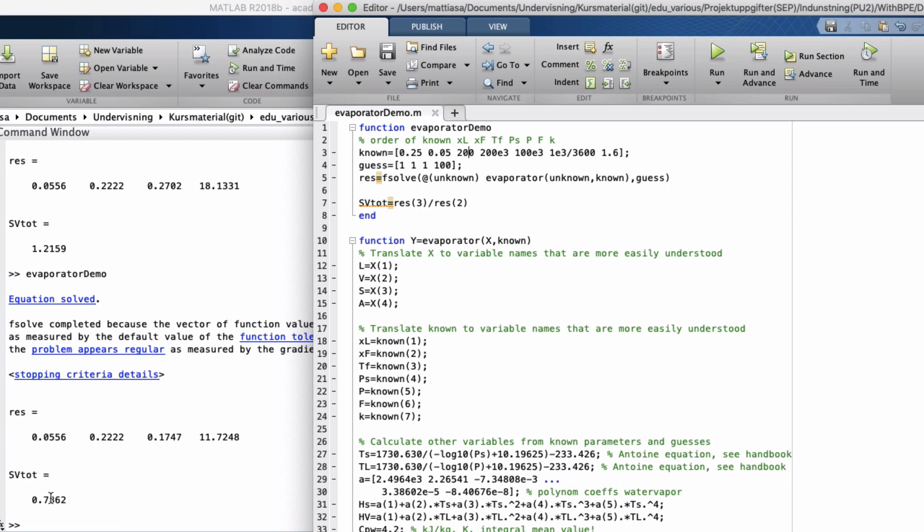If we instead increase the temperature of the feed, we can actually get a specific steam consumption below one. In this case, our feed is so hot that when it comes into the evaporator it flashes. That is, part of the feed evaporates even before being heated by the steam.